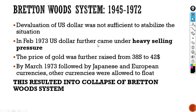In February 1973, the US dollar came under heavy selling pressure. The price of gold was further raised from 38 dollars to 42 dollars. By March 1973, followed by Japanese and European currencies, other currencies were allowed to float, which resulted in the complete collapse of the Bretton Woods System.